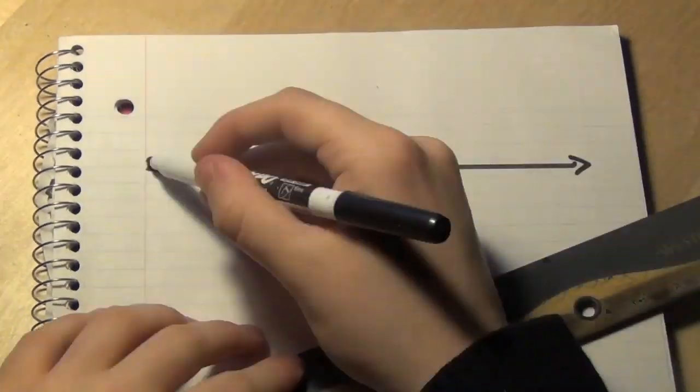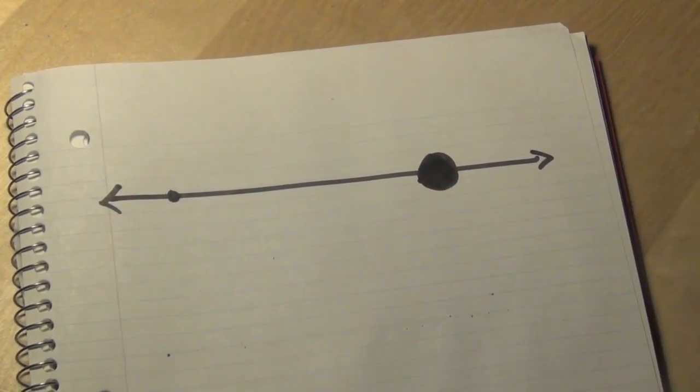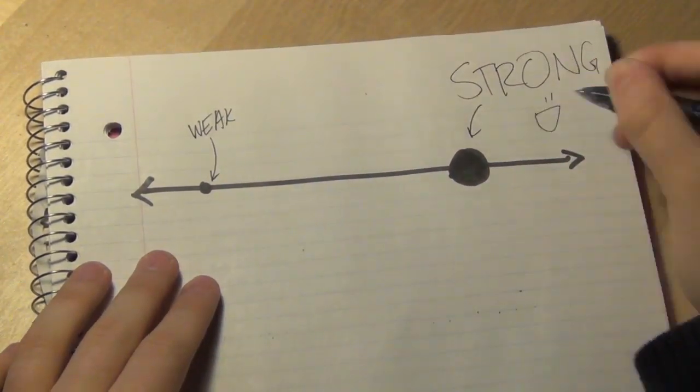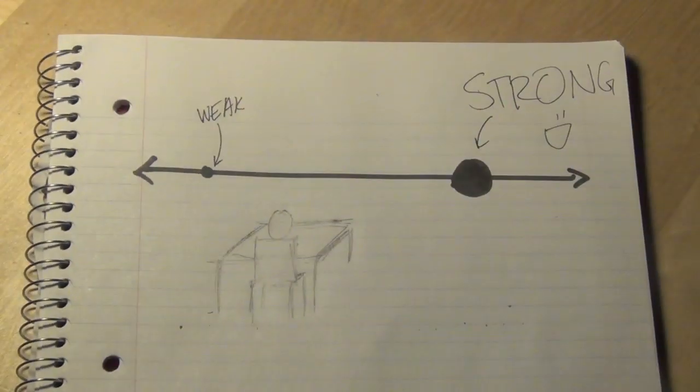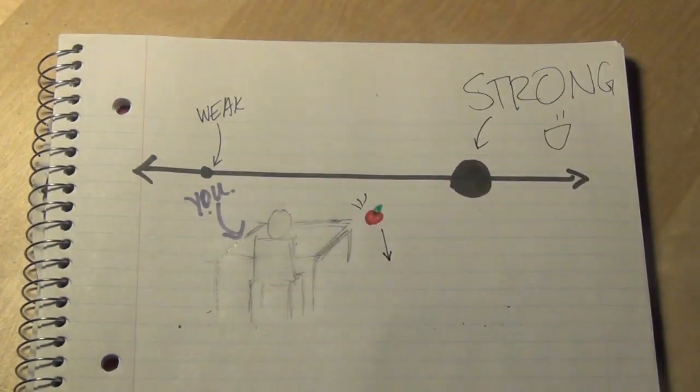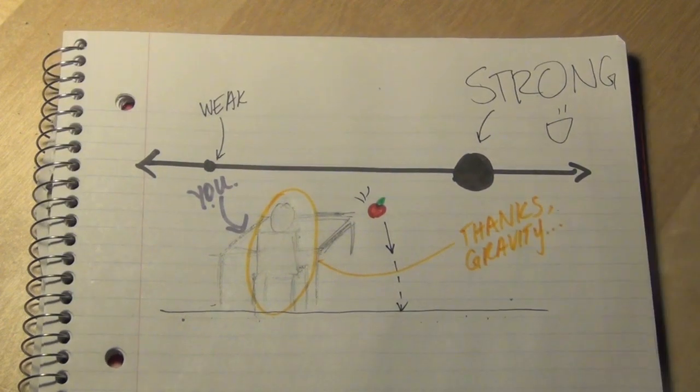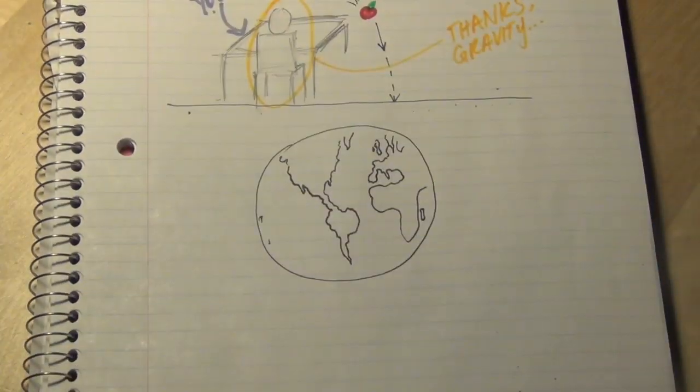Like with other fields, the gravitational field is stronger in some places than others. You've probably observed this phenomenon when dropping a pencil or an apple off a desk. It falls to the ground. In fact, you're observing it right now, sitting down in your chair.